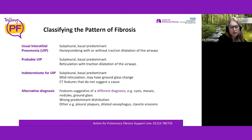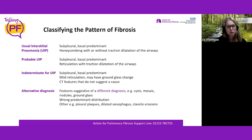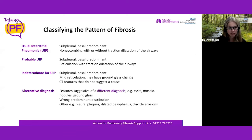Once I've looked through the scan and identified the fibrosis pattern, I try to classify it into four main groups: has the patient got usual interstitial pneumonia — with honeycombing and traction dilatation at the bases around the sides — or is it less likely given no honeycombing, or indeterminate, or something altogether different?